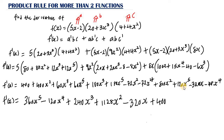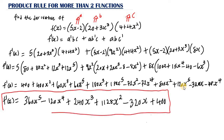So the final answer is f prime of s equals 360s⁵ minus 120s⁴ plus 240s³ plus 1128s² minus 320s plus 400. This is the derivative of the function using the product rule for more than two functions. If any part was confusing, ask questions in the comment section below. If there's a topic you want covered, tell me in the comments. Don't forget to subscribe and hit the bell notification icon. See you next time!